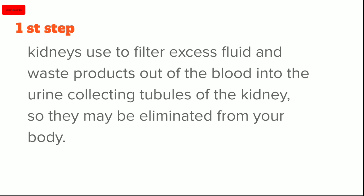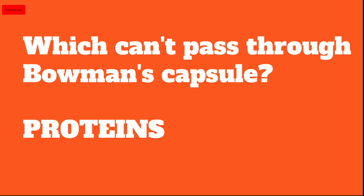The first step, also known as ultrafiltration, is where the kidneys filter excess fluid. As a result, nitrogenous waste products are retained and the rest forms the glomerular filtrate. This step filters excess fluid and waste products out of the blood into the collecting tubules of the kidneys, allowing elimination from the body. Since glomerular filtrate is plasma minus plasma proteins, the substance that cannot pass through Bowman's capsule is proteins — that is why plasma proteins are excluded from the glomerular filtrate.